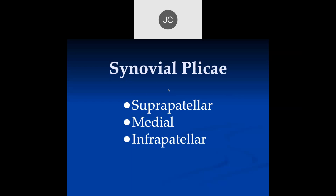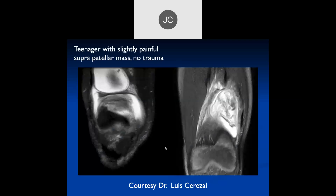Now let's talk about synovial plica. This was a big issue 20–30 years ago. Plica are fibrous bands inside the joint space. The knee joint embryologically starts as three separate compartments — medial, lateral, and suprapatellar. They grow together and the walls get resorbed where they meet, leaving one compartment. But those walls may not completely resorb, leaving fibrous bands between compartments — that's the primary etiology of synovial plica. The classic ones are suprapatellar, medial, and infrapatellar plica.